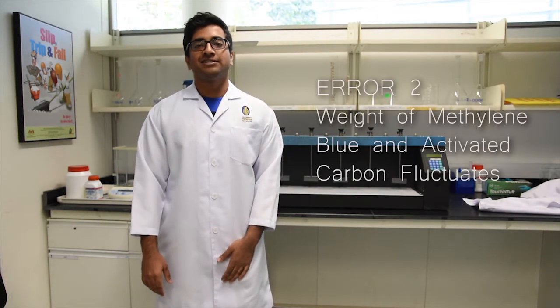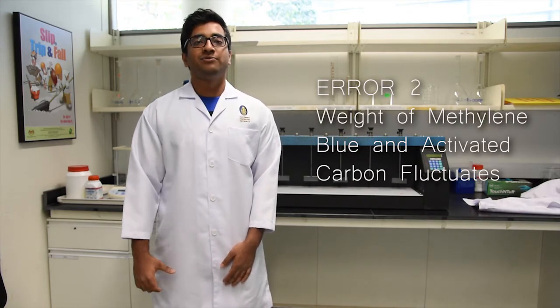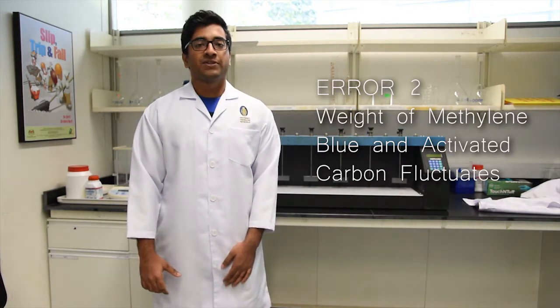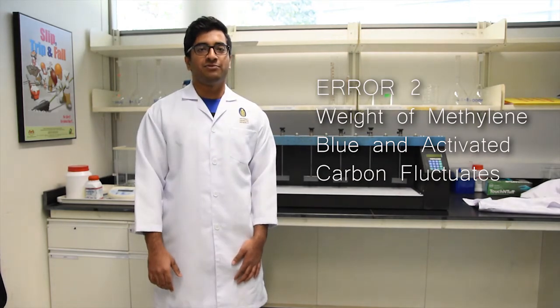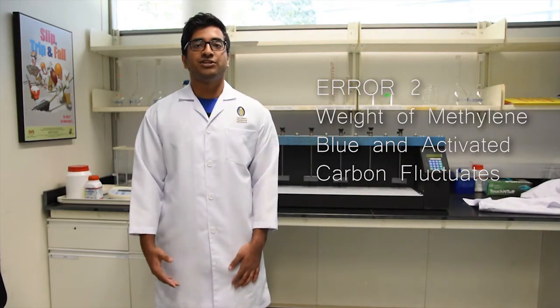Secondly, fluctuation occurs when we are weighing the methylene blue and granular activated carbon. For this, we have to ensure that the glass walls of the electronic balance are tightly closed during the reading of the weight of the methylene blue and activated carbon in order to get more accurate readings.